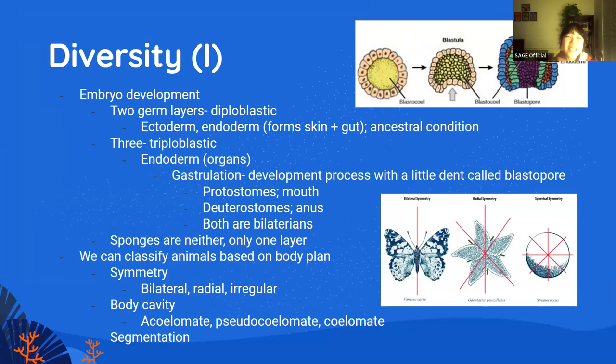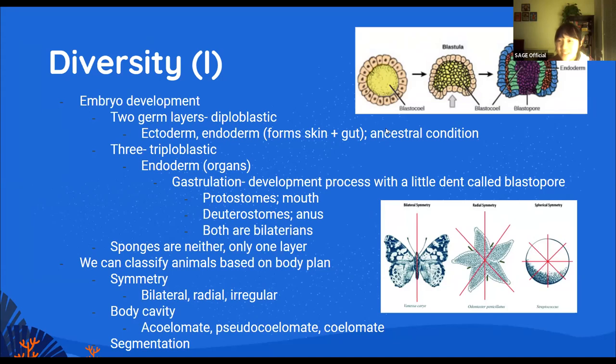There are 10 slides called 'diversity.' Choanoflagellates have very weird names — there's dinoflagellate, there's a lot of flagellates — but they're all protist names. There are a couple of different ways that we classify animals, and in biodiversity, it's all about classifying animals and finding their relationships. To put animals into big groups, we look at their embryonic development.